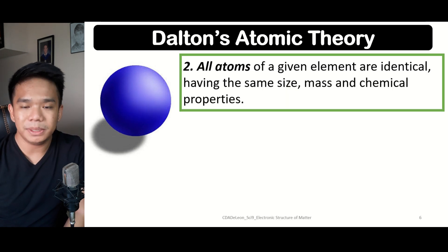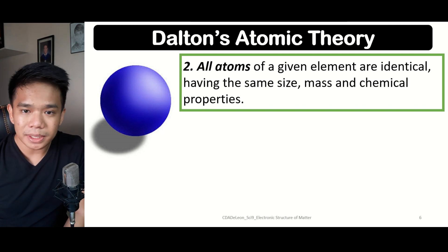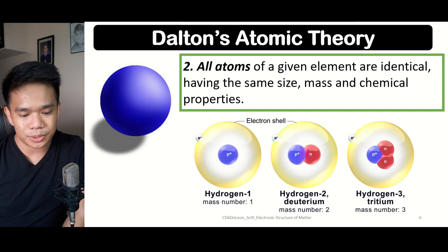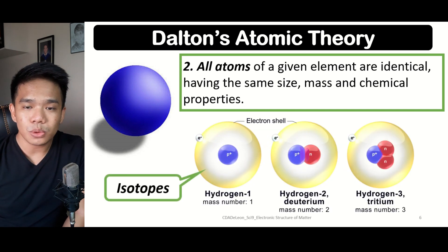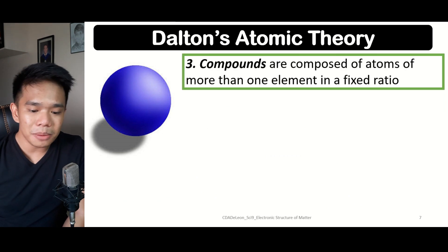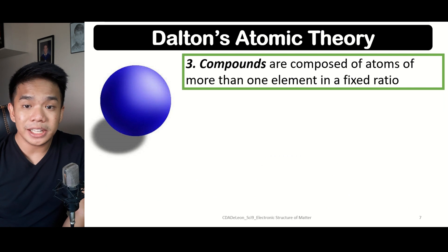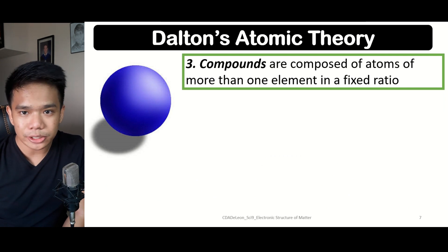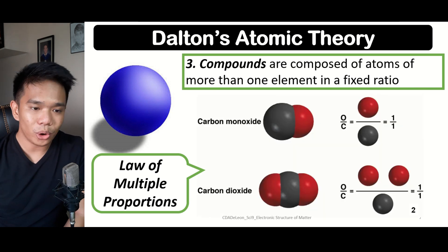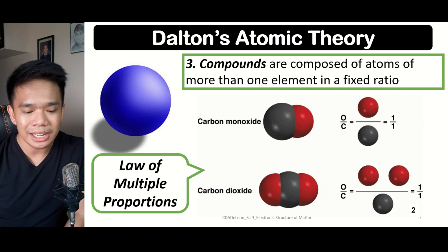The second postulate states that all atoms of a given element are identical, meaning they have the same size, mass, and chemical properties. However, this was also disproven because of the idea of isotopes, which we will discuss later. Third, Dalton said that compounds are composed of atoms of many elements within a fixed ratio — but this too was disproven due to the law of multiple proportions.